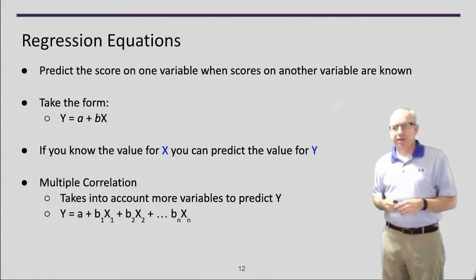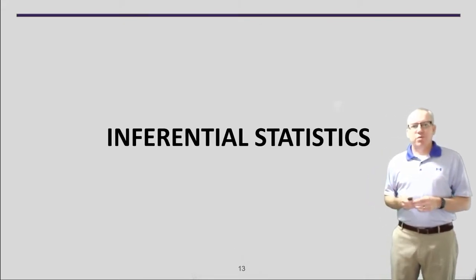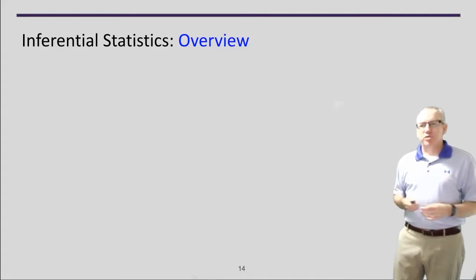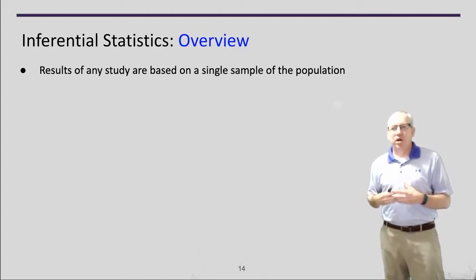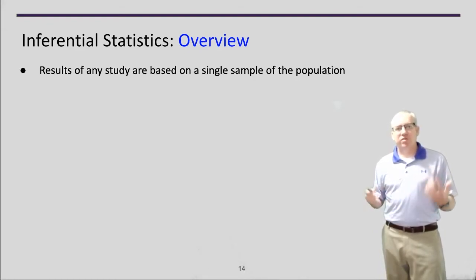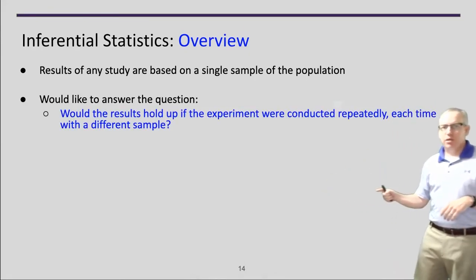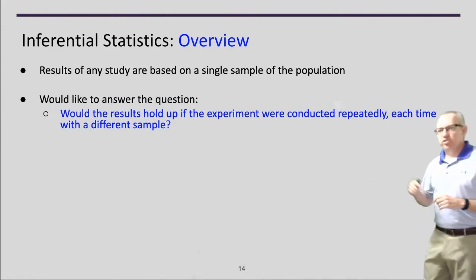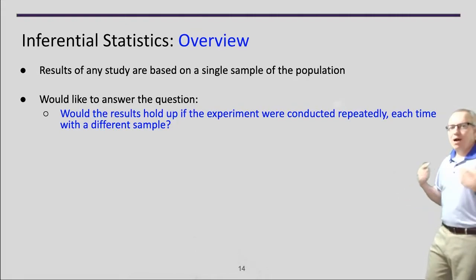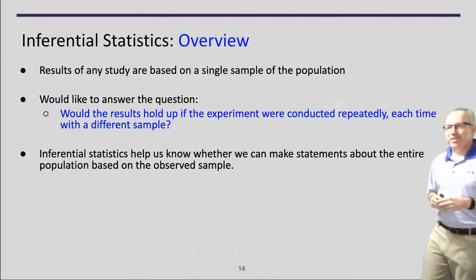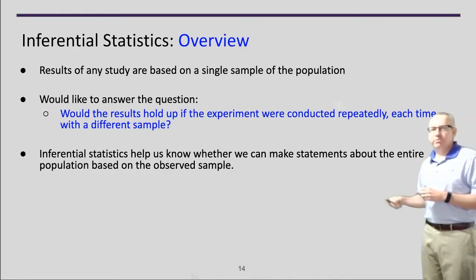Now let's move to the second set of statistics: inferential statistics. These are the ones we're probably more familiar with. With these, we're trying to actually draw conclusions about the data. The idea of inferential statistics is that any one study I run has results based only on one sample from the population. I have to wonder: would this same result happen if I ran the study in a different situation? Would the result hold up if the experiment was conducted repeatedly with a different sample? Inferential statistics help us know how strong a statement we can make about the entire population.